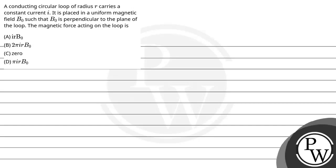Hello Barcho, let's read this question. The question says a conducting circular loop of radius R carries a constant current I. It is placed in a uniform magnetic field B0 such that B0 is perpendicular to the plane of the loop.